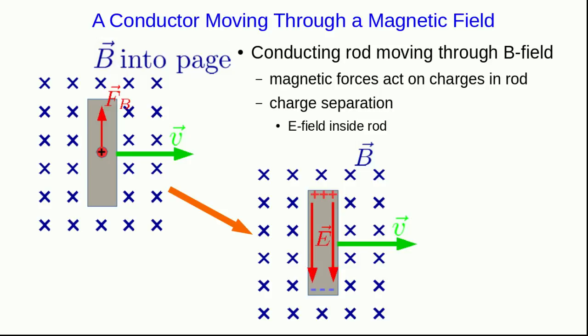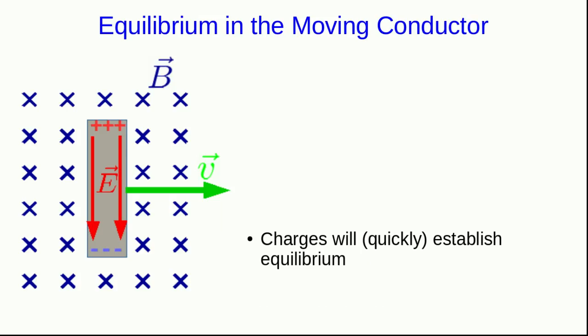And that's going to lead to charge separation, because positive charges move up to the top of the rod, and it becomes positively charged, and the bottom of the rod is left negatively charged. These charges moving around in the rod and establishing a charge separation are going to quickly come to equilibrium, because as they move and the charge separation occurs, there is now an electric field inside the rod because of that separation of charge.